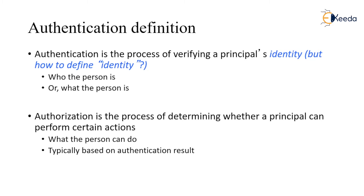There is a difference between authentication and authorization. Authentication is defined as the process of verifying a principal's identity — that principal is nothing but a person, who he or she is. Authorization is the process of determining whether a principal can perform a certain action, or whether that principal has been given the authority to access particular data.